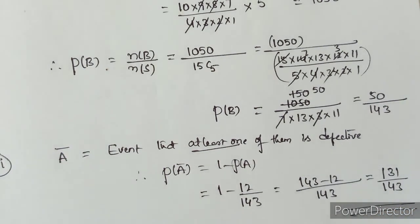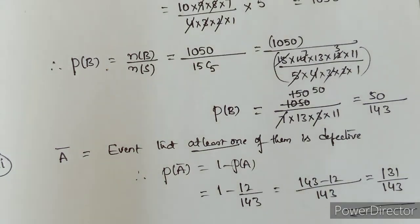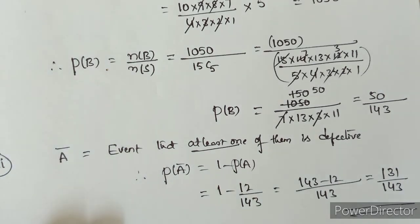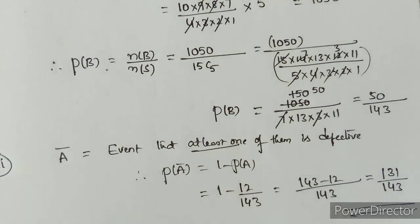This is the probability of the event that at least one of them is defective. In the coming classes, we will discuss multiplication theorem, conditional probability, conditional events, definitions, and some related problems. So far we have worked out all the problems under addition theorem. Hope you understood this class. Thank you.